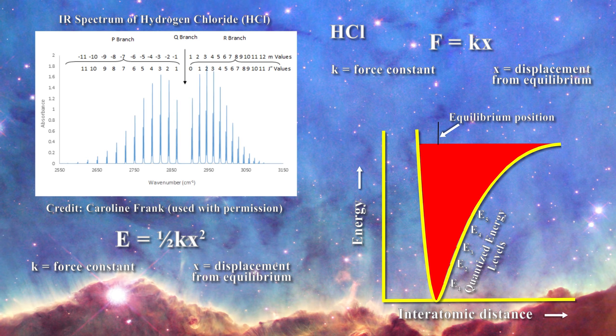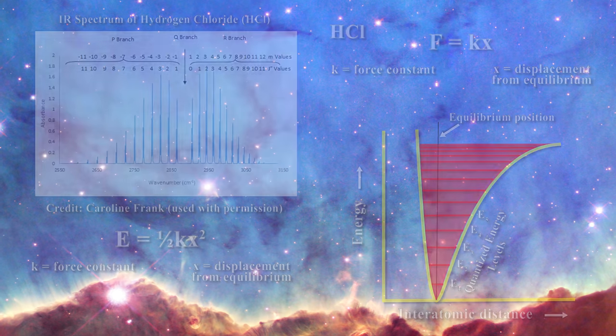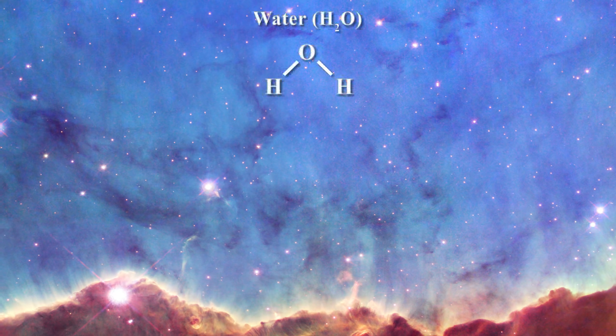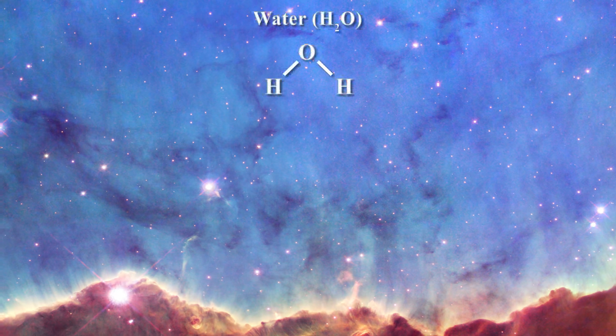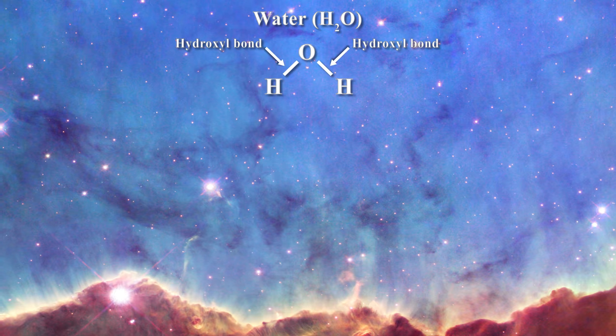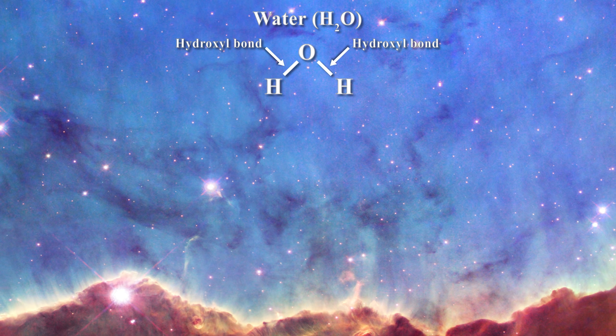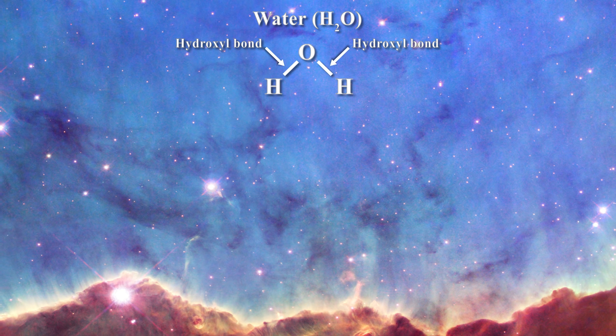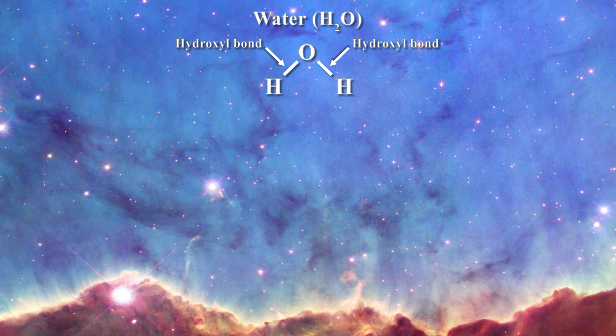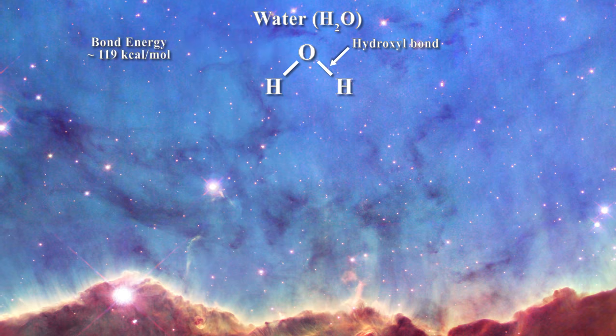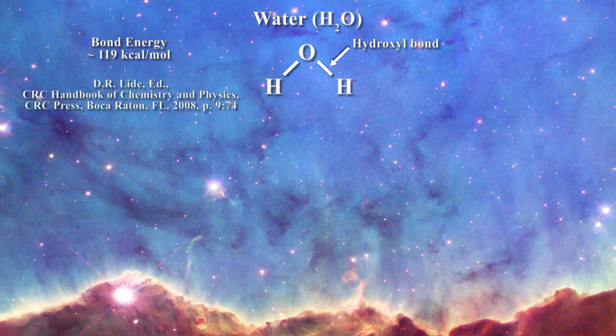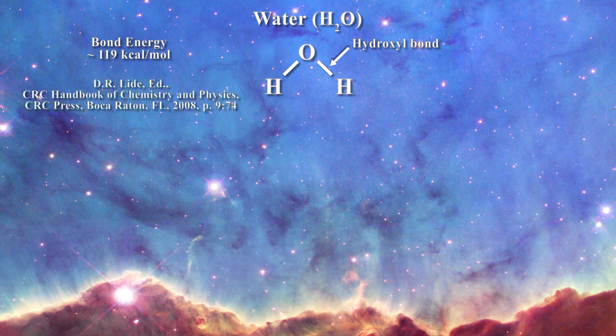Now it is time to turn to water. You recall that in water one has a single oxygen atom bound to two hydrogen atoms. Those two bonds have a specific name in chemistry. They are called hydroxyl bonds. Bond energy is a measure of the amount of energy required to break a bond and dissociate it into its component atoms. It is a measure of the strength of the hydroxyl bond which is on the order of 119 kilocalories per mole as one can learn here. Once again we can represent the water molecule using weights on a spring.